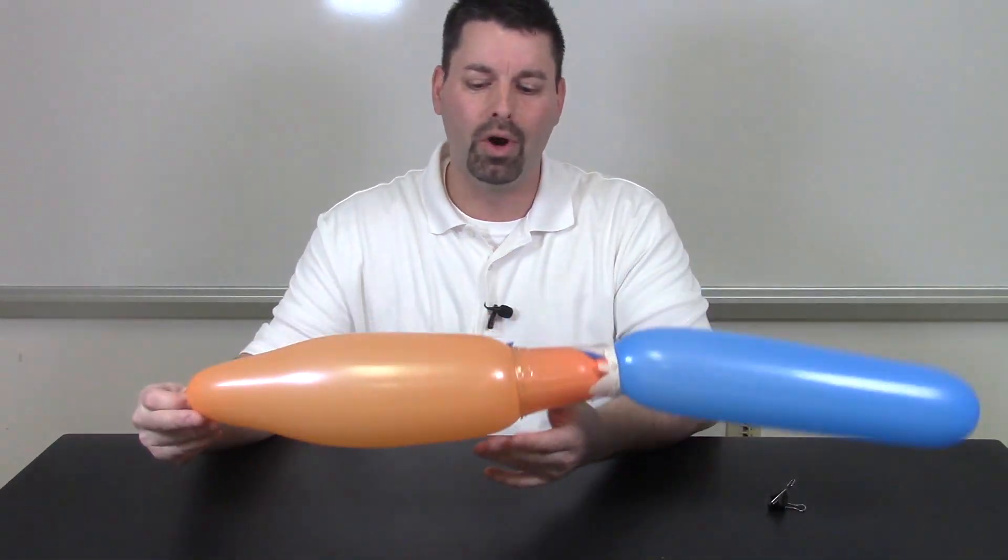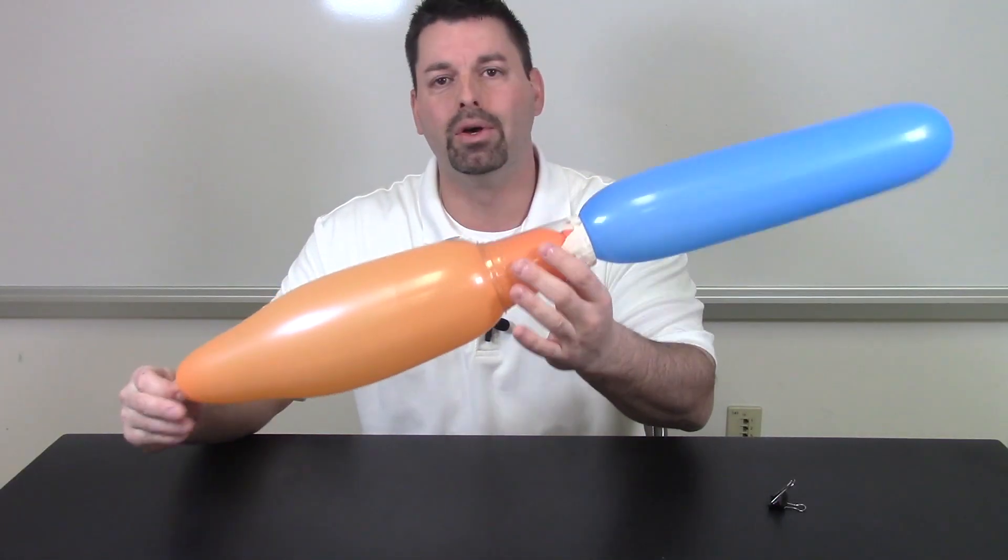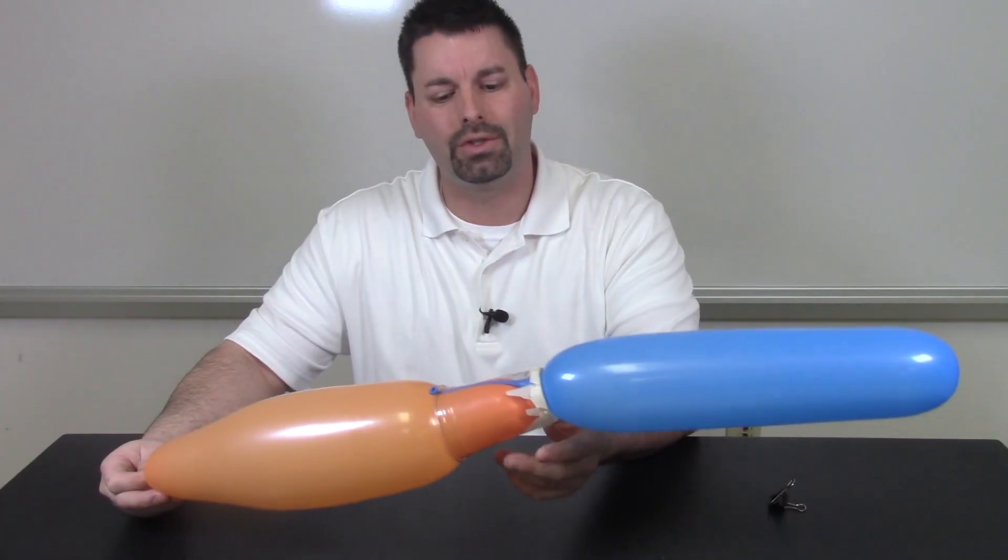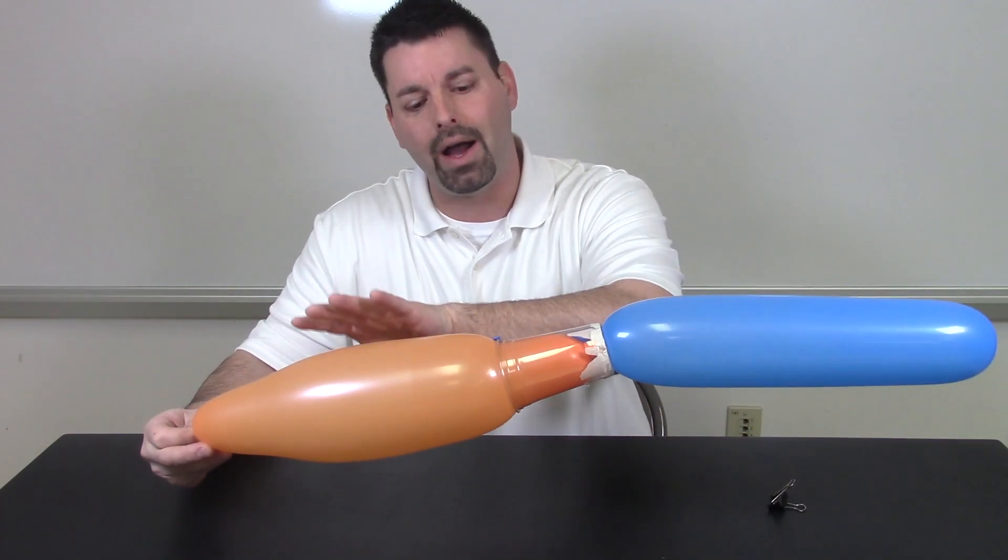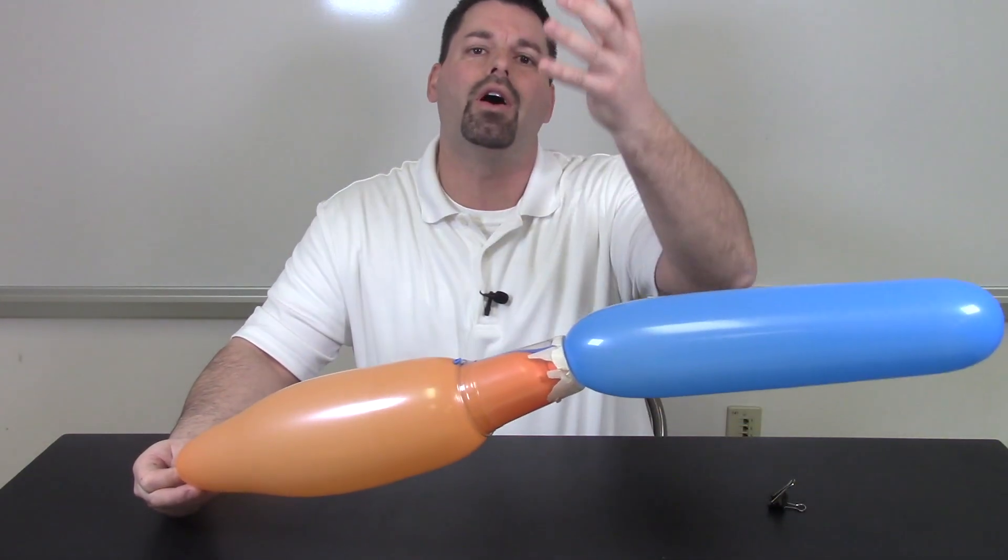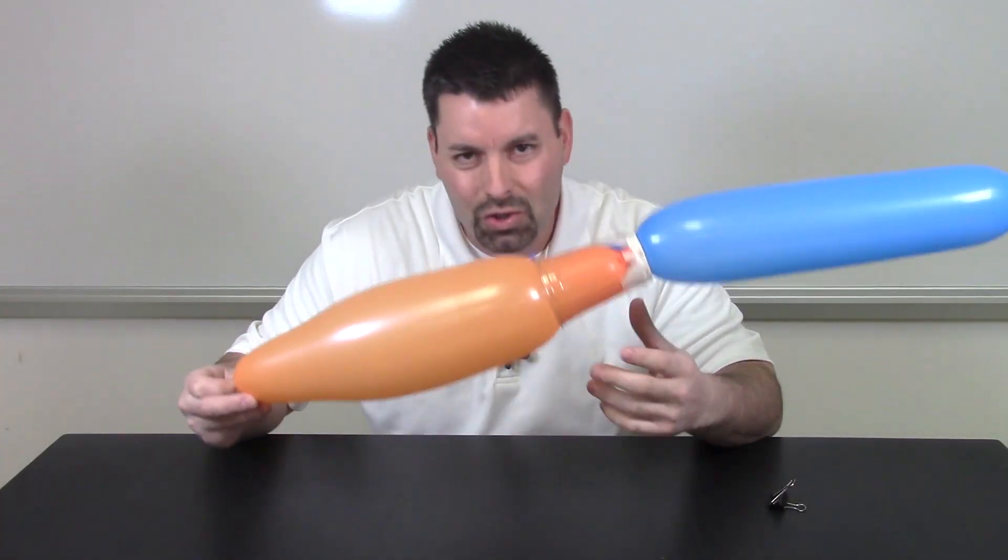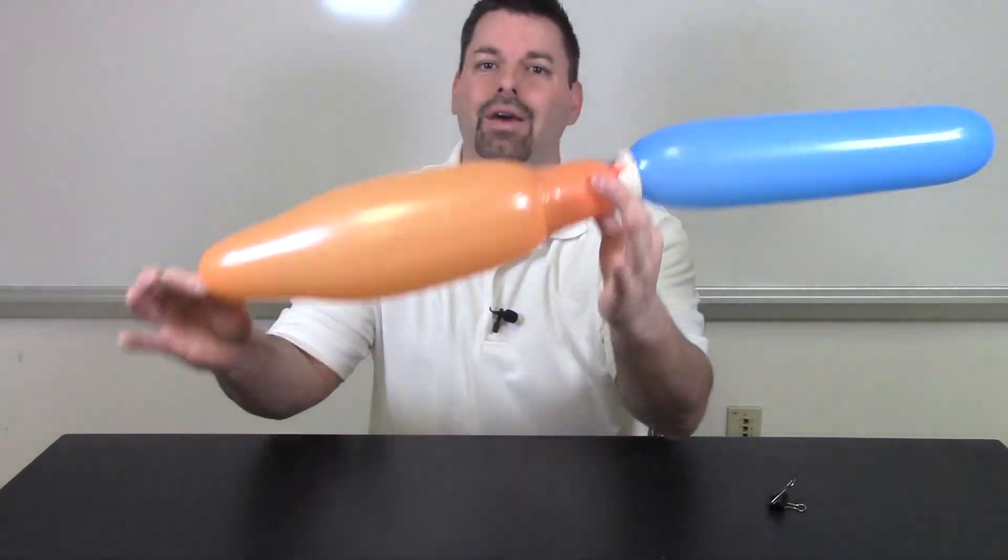We actually blew our balloons back up so we could rebuild our two-stage rocket so we could talk about what happened. If you think about what you saw, I saw the first part of my rocket, the orange balloon, lift our rocket off the ground, and then when all the energy was out of that balloon, the blue balloon took over and flew even further. It's a two-stage rocket design that we built here in our classroom.